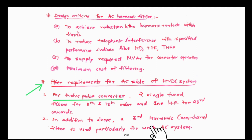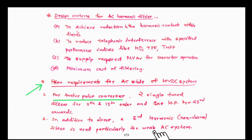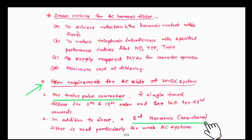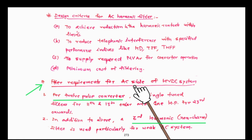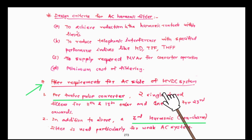In addition to the above, a third harmonic non-characteristic filter is used particularly if the AC system connected to the HVDC converter is a weakly connected or non-meshed network. Third harmonics are not present in all systems, but in a weakly connected network there may be disturbances in AC voltage — unbalanced voltages — and in such cases a non-characteristic harmonic filter must be in place. So for the AC side we have two single-tuned filters, one high-pass filter, and one non-characteristic filter — four filters in total.